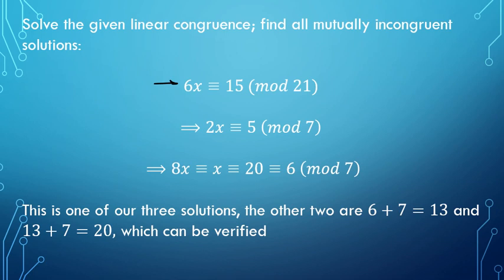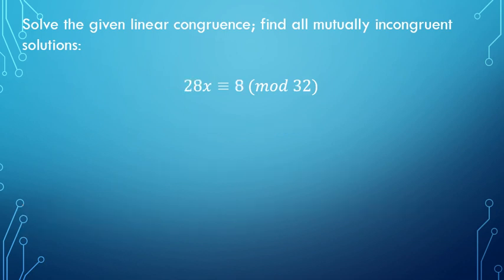So next up, I have a couple problems for you to try on your own. I want you to see if you can solve these linear congruences. So first one, solve the given linear congruence. Find all mutually incongruent solutions. 28x is congruent to 8 mod 32. So pause the video here. Try to find all mutually incongruent solutions to this given linear congruence. Think about the process that we talked about in the previous video, as well as just now in this one here, and see if you can come up with all four correct answers. So press pause. Once you think you have the correct answers, press play, and we'll see if you were right.